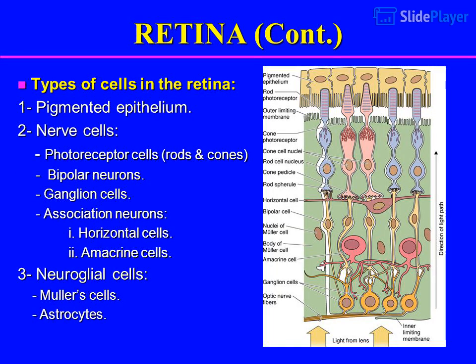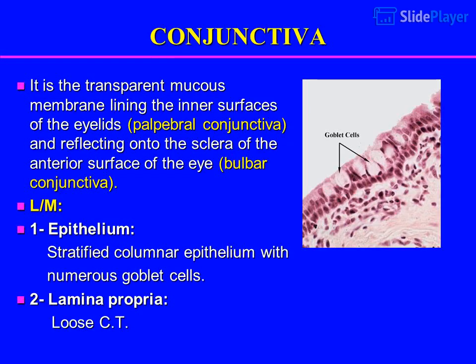Types of cells in the retina: 1. Pigmented epithelium. 2. Nerve cells: photoreceptor cells — rods and cones; bipolar neurons; ganglion cells; association neurons including horizontal cells and amacrine cells. 3. Neuroglial cells: Müller's cells and astrocytes.